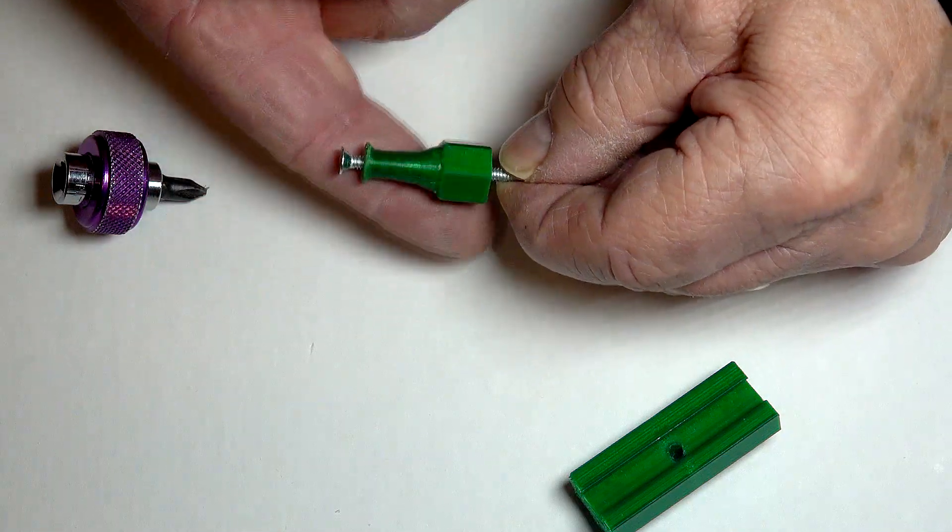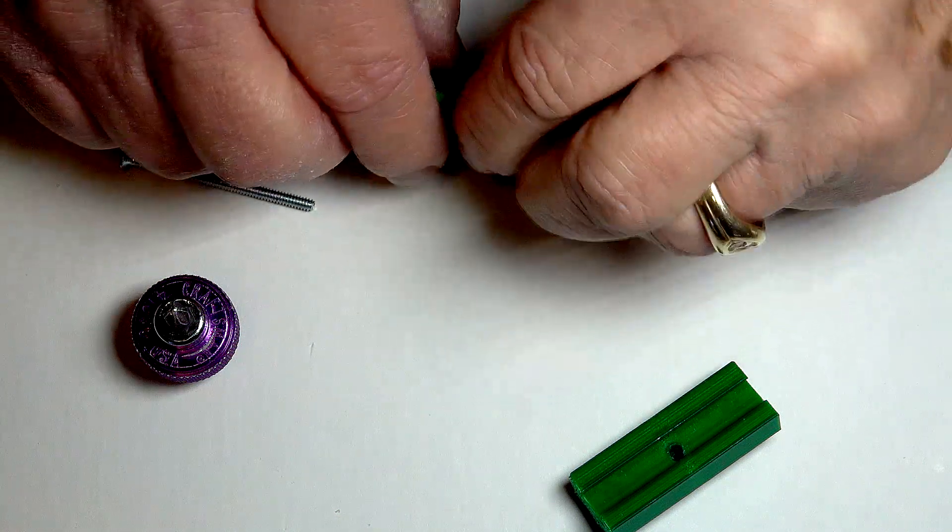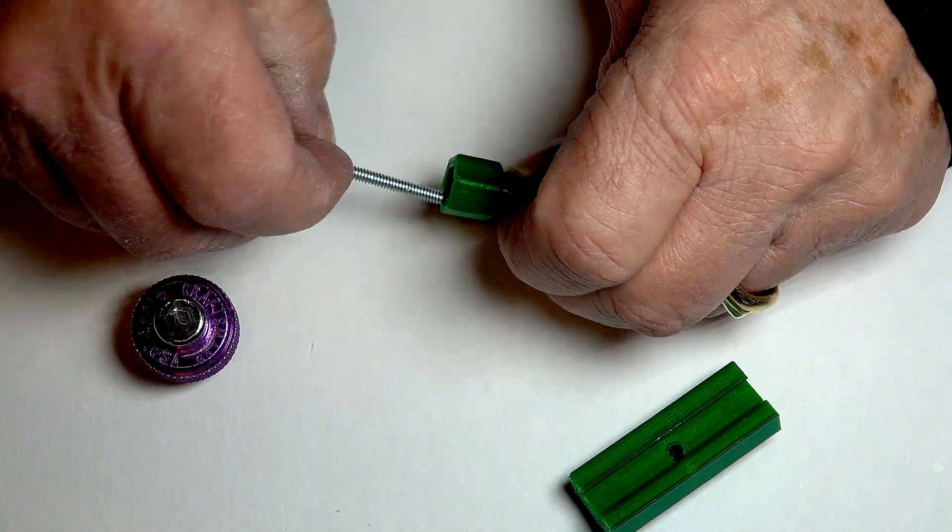Unscrew the machine screw and screw it into the nut through the hex recess and continue turning the screw until it is flush with the end of the knob with the small hole.